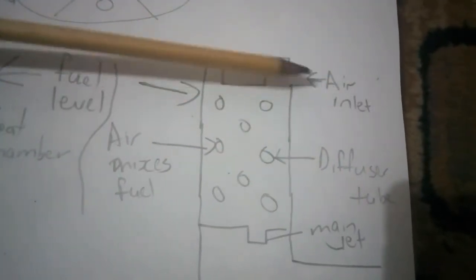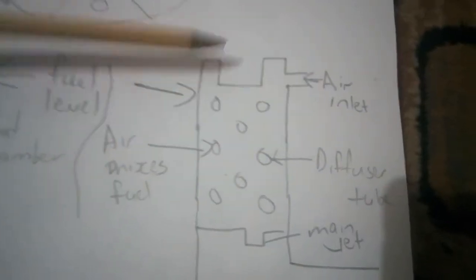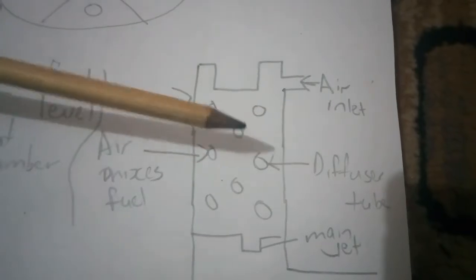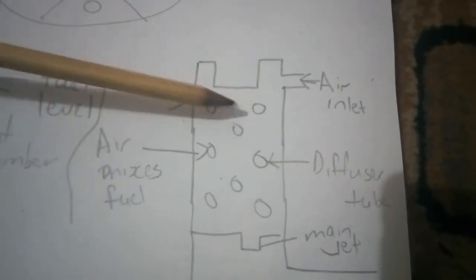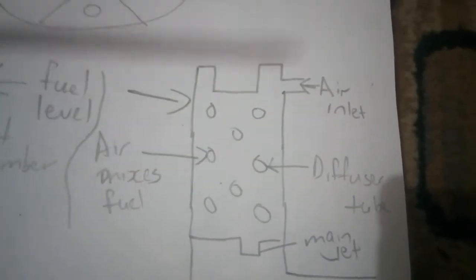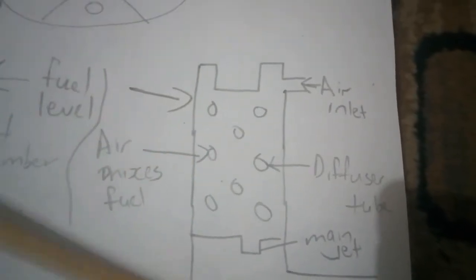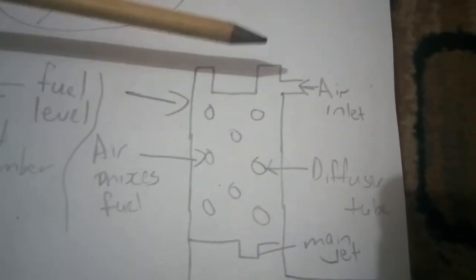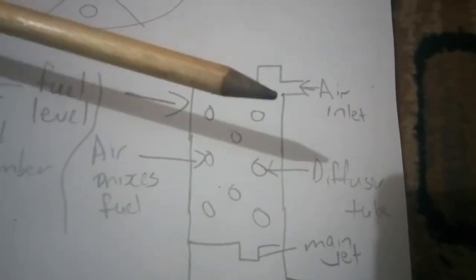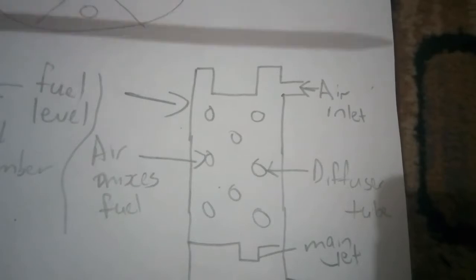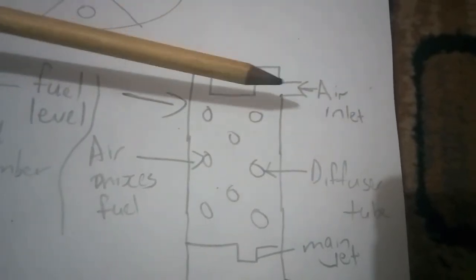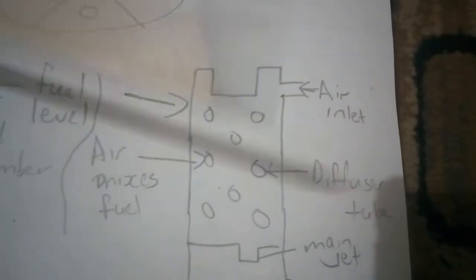The diffuser tube is on our main jet, and that air comes through these holes and mixes with the fuel as it goes out of the discharge nozzle. This helps to weaken the mixture slightly and thus maintain a correct ratio of fuel to air, preventing an overly rich mixture